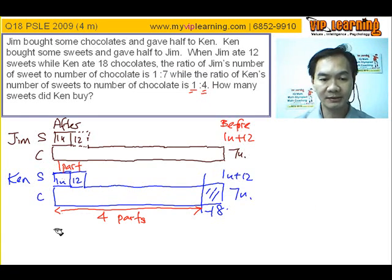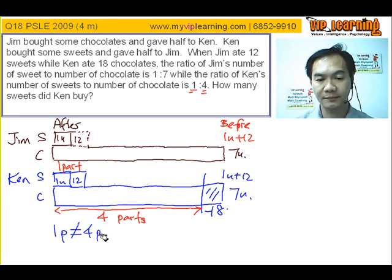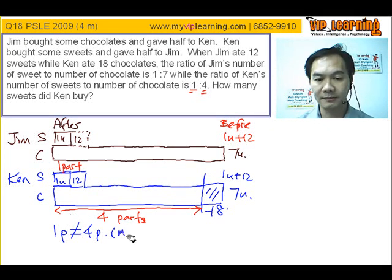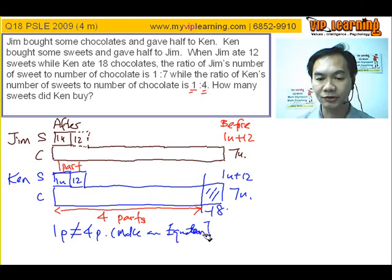Now what happens is, one part over here of sweet is not equal to four parts over here. For example, one hundred units here versus four hundred units. They are not equal. So, what we do is, we make an equation.